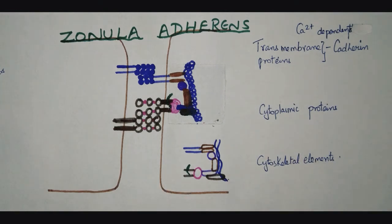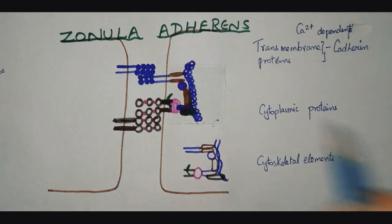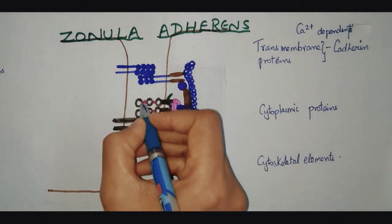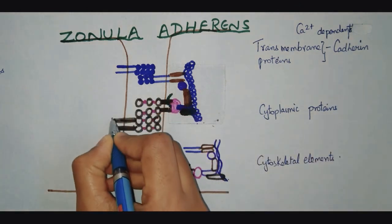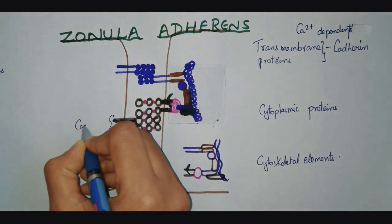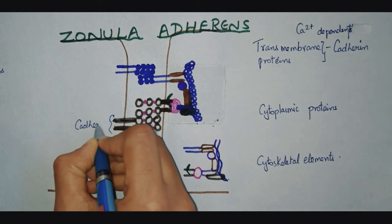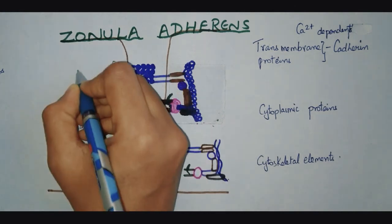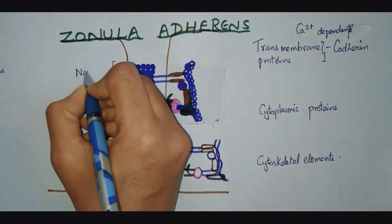There is another type of transmembrane protein present in the zonula adherens, and they are the nectins. In this diagram, these are the cadherins and these are the nectins.